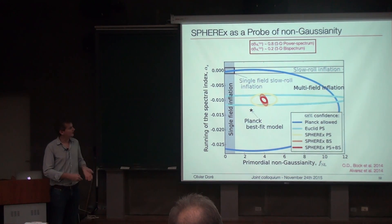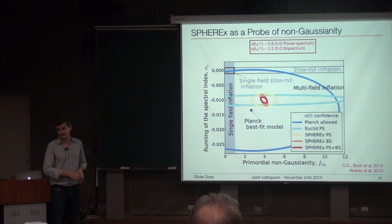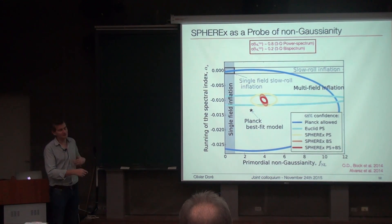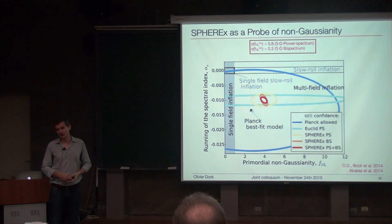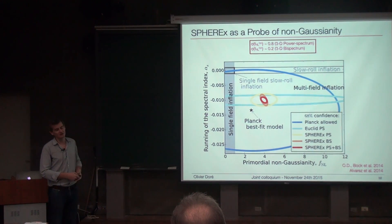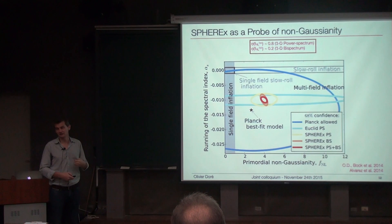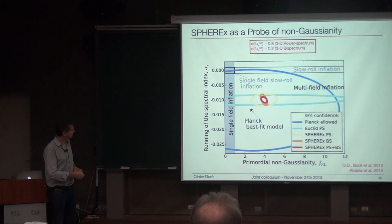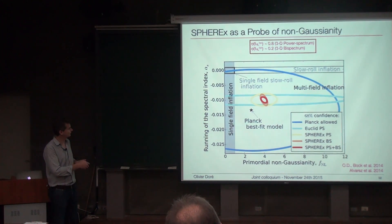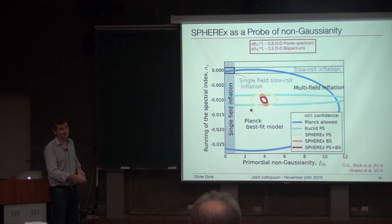There is an experiment whose goal is to measure the large-scale power spectrum of galaxies to constrain FNL. In this plot you see the running of the spectral index — important for inflation — and the FNL parameter. These contours correspond to Planck constraints, meaning Planck allows any value in this region. The new survey aims to push well beyond this, and I'm happy to discuss further offline.